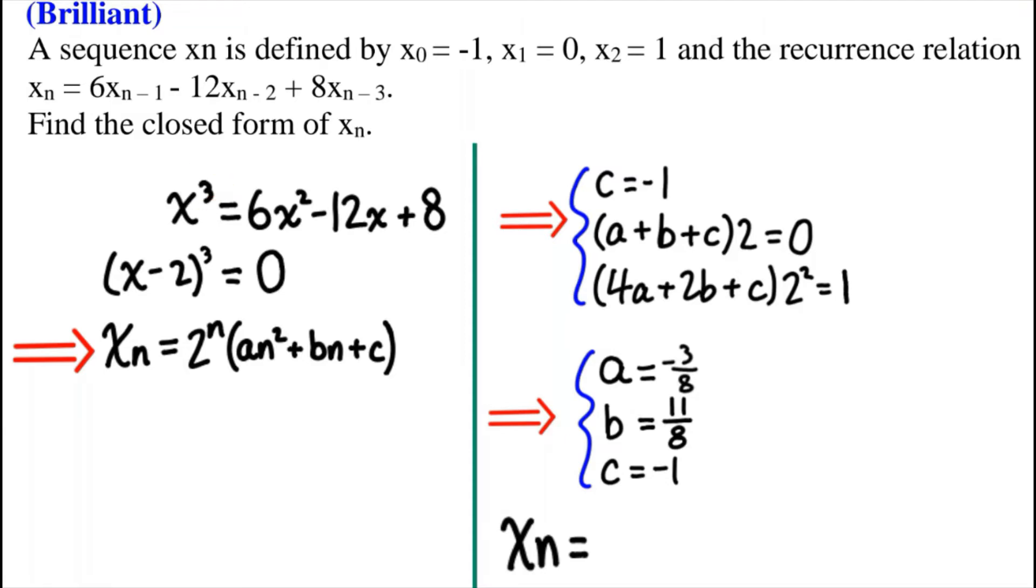However, we still can use the same equation that we used in our last video. So by solving this equation, we get that x minus 2 to the third power equals 0. Now, if we put that into our equation from the last video, we get that xn equals 2 to the n power times an squared plus bn plus c.